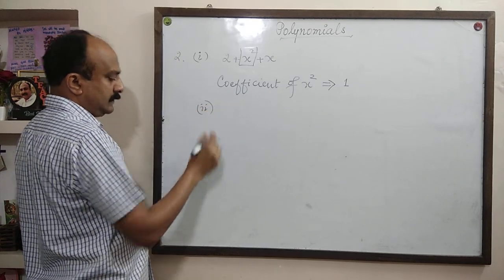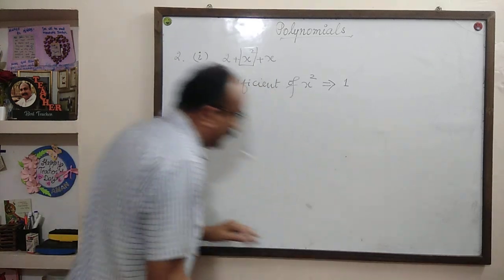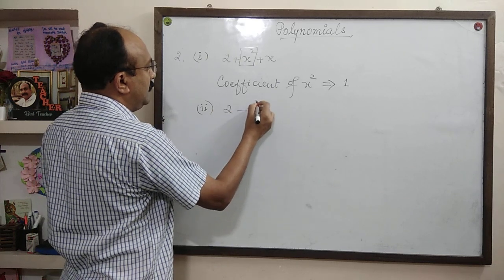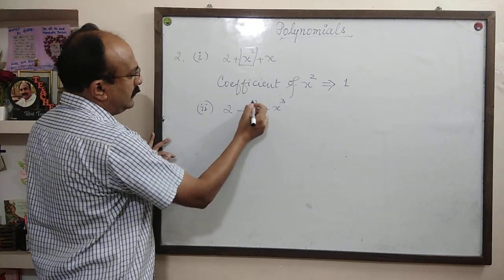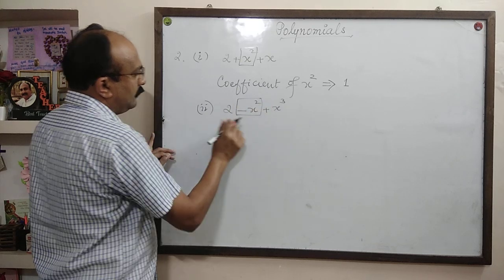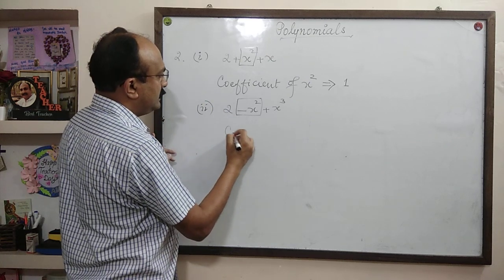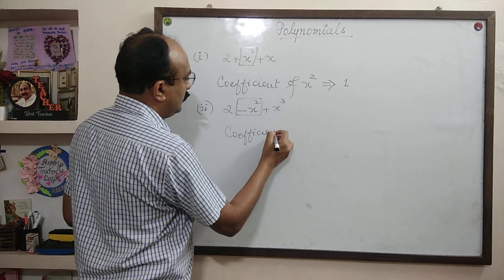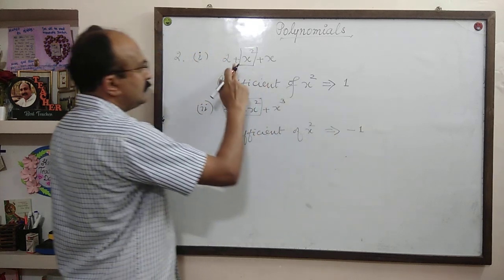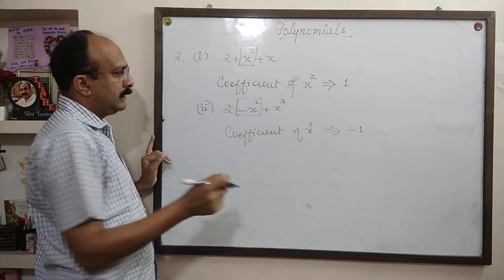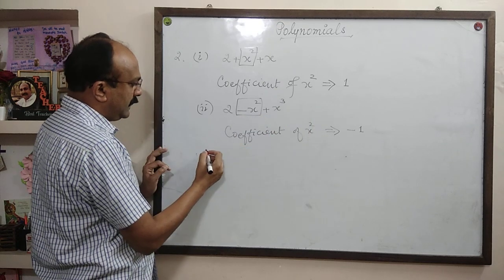Second question: 2 minus x square plus x cube. Look at the x square term. What is the numeral along with this x square? It is minus 1. So the answer is: coefficient of x square is minus 1. Remember: plus x square means plus 1, minus x square means x square into minus 1, so the coefficient of x square in this question is minus 1.